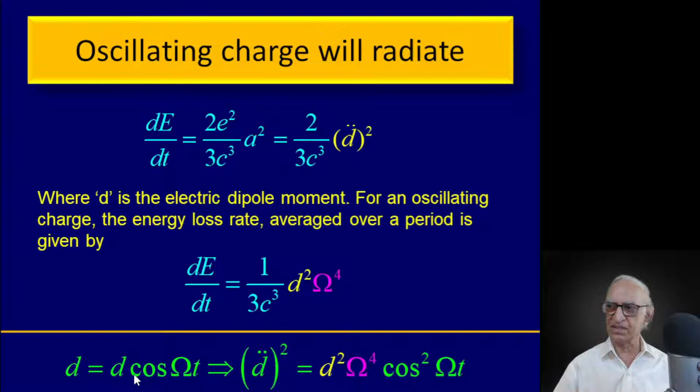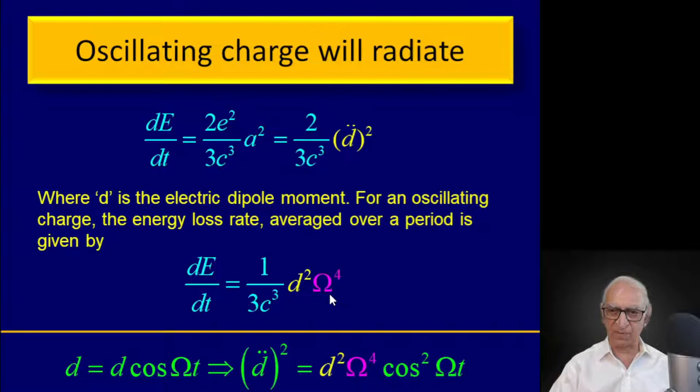If d equals d₀ cos(ωt), taking two time derivatives gives ω², and squaring that gives ω⁴. Traditionally it is written as 1/λ⁴, and that is Rayleigh's scattering formula.